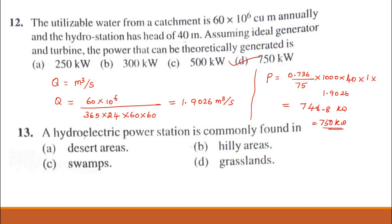Problem 13. A hydroelectric power station is commonly found in: desert areas, hilly areas, grassland, or swamps. Normally found in hilly areas.